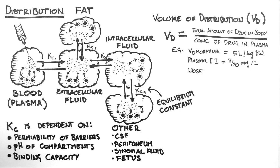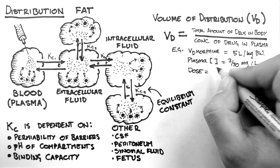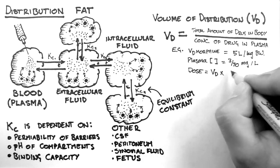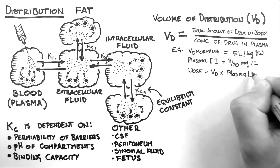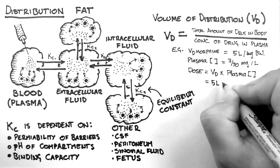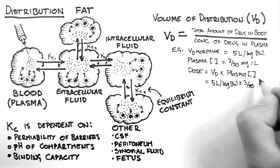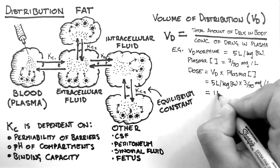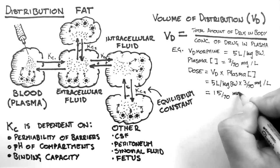Well, by rearranging the above formula, I can see that the dose I need to give, which in this case is the same as the total amount of drug in the body, is the volume of distribution times the desired plasma concentration. Substituting in the numbers and solving shows that I need 15/70ths of a milligram for every kilogram of body weight.